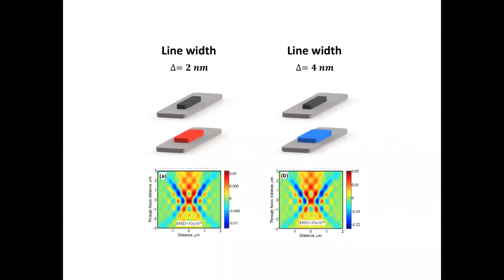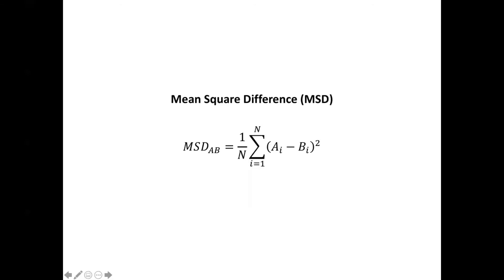As mentioned before, different dimensional changes produce qualitatively distinct differential TSOM images. However, for different magnitude changes of the same dimension, the differential TSOM images appear quite similar. Then, how can we distinguish the amount of differences? To do that, let me introduce this value.